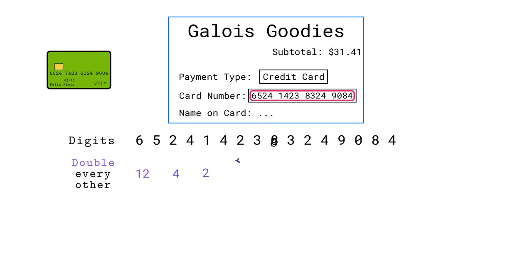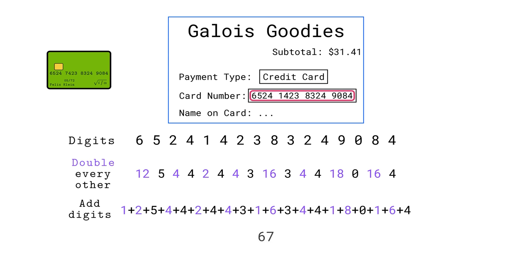Double every other digit, starting with the first, and then add all the digits together. The result, 67, is not evenly divisible by 10, so the credit card number is invalid.